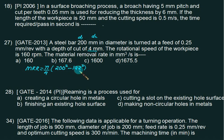This one is length of job. Length of job is L divided by machine time L upon FN. L cancels. So we have pi by 4 into 200 square minus 192 square. Feed speed is 0.25, rotational speed is 160.